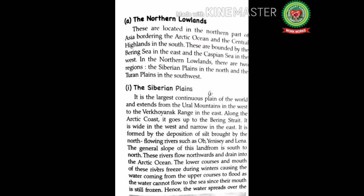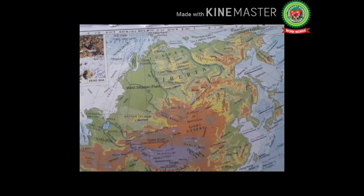Let's start with the reading — take out your page number 65 of your geography book. The northern lowlands are located in the northern part of Asia, bordering the Arctic Ocean and the central highlands in the south. They are bounded by the Bering Sea in the east and the Caspian Sea in the west. In the northern lowlands there are two regions: the Siberian Plains in the north and the Turan Plains in the southwest.